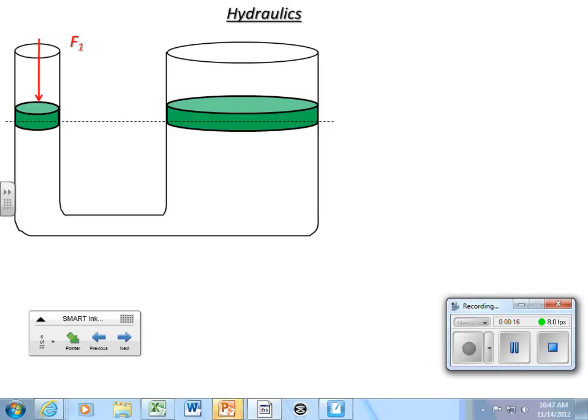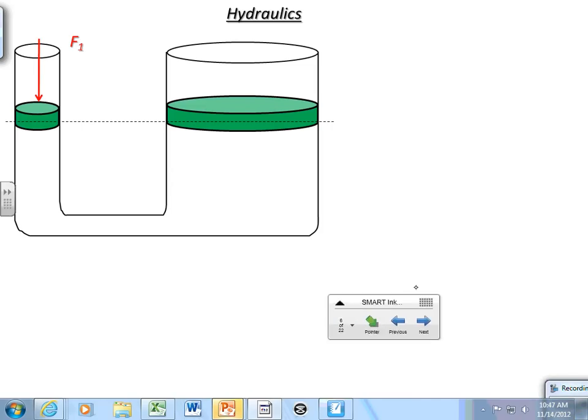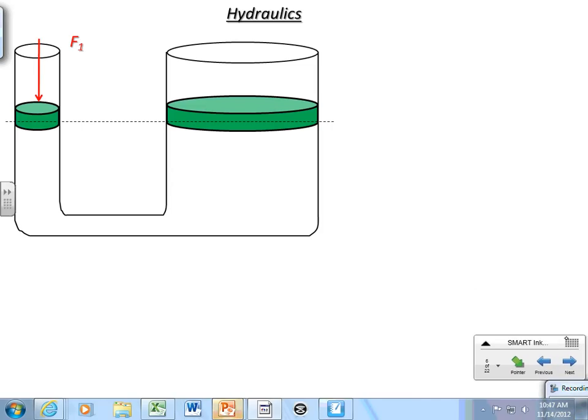So, a great application of static fluid and pressure has to do with what we call hydraulics. A typical hydraulic system really does not look like this. A typical hydraulic system has a pump in it and a reservoir, but it really works based on this main principle. There are two different sized cylinders like this, each cylinder with a piston in it.